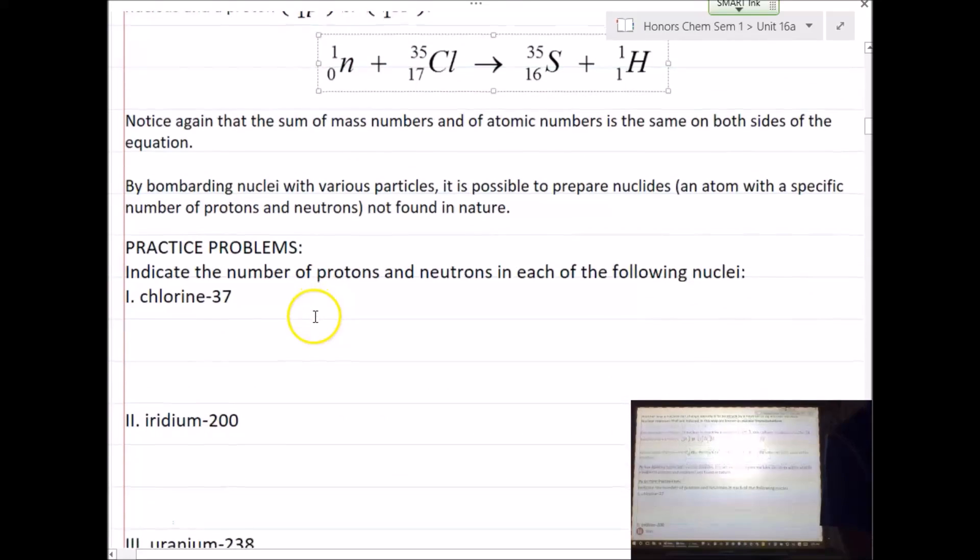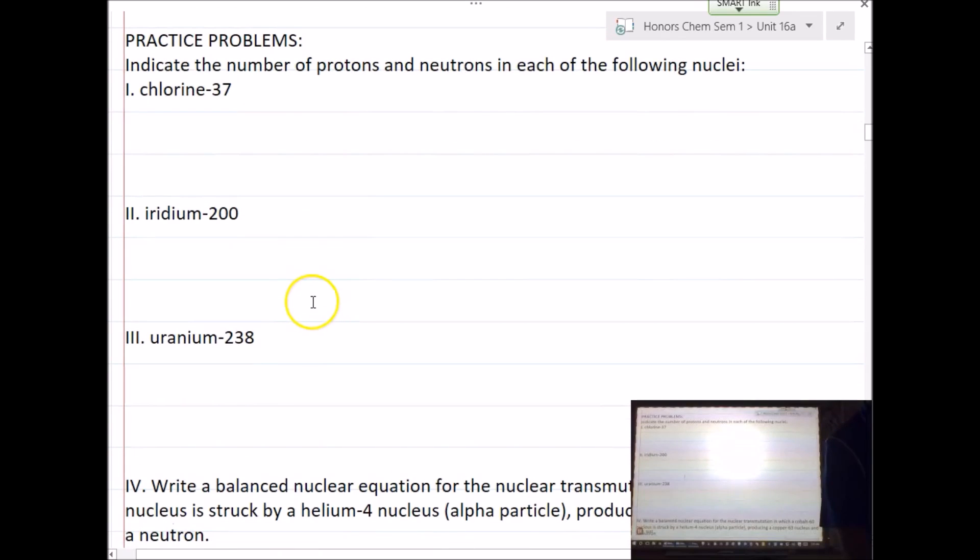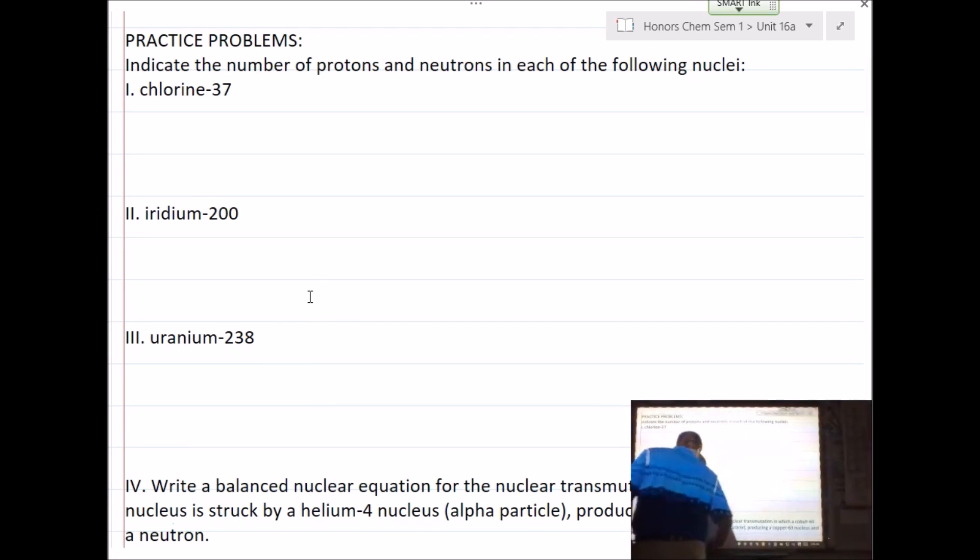Ready for some practice problems? These are brutal. Number one. Indicate the number of protons and neutrons for each of the following nuclei. And, here's what I'd suggest. I would write out the symbol when doing this. So, chlorine is Cl. Hopefully, you haven't forgotten it was 52. But, if it's not one of your 52, I will give it to you. Typically, we'll be working with the bottom two rows.